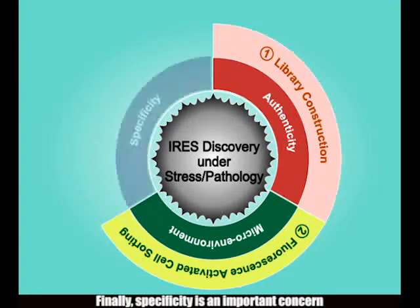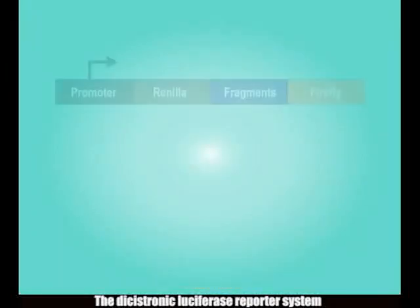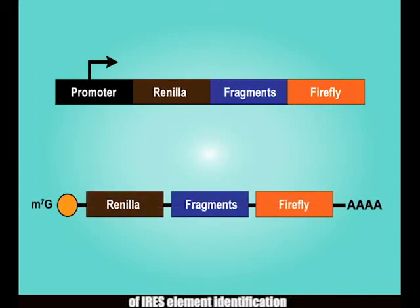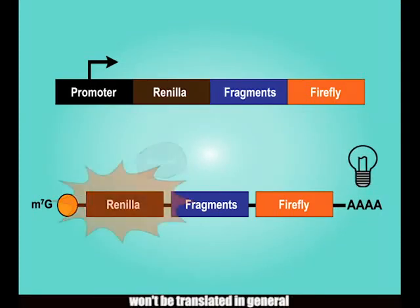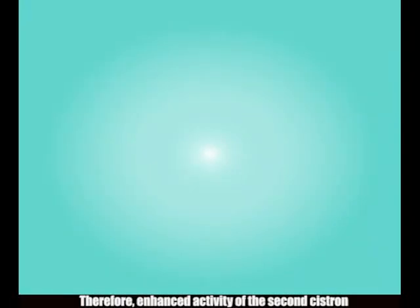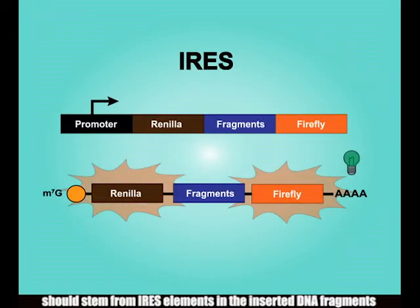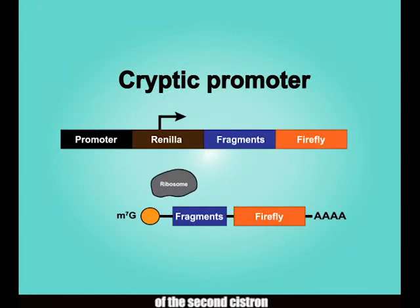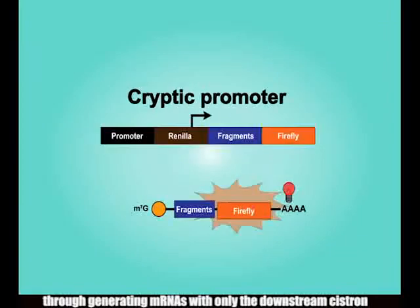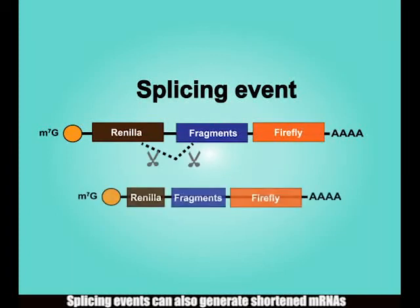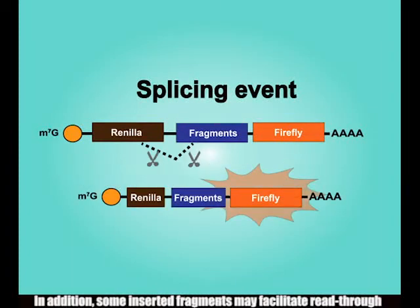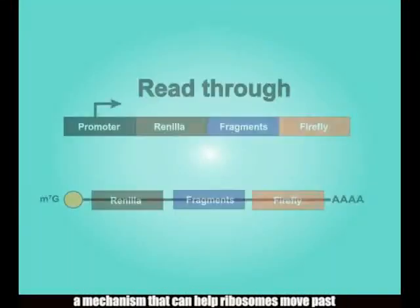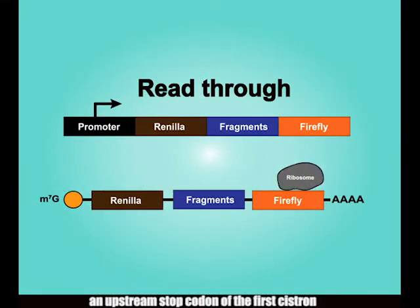Finally, specificity is an important concern because false positive signals could be easily generated in IRES discovery. The disistronic luciferase reporter system has been considered the gold standard of IRES element identification. As this cartoon depicts, the second cistron of the disistronic construct won't be translated in general. Therefore, enhanced activity of the second cistron should stem from IRES elements in the inserted DNA fragments. However, cryptic promoter activity can increase expression of the second cistron through generating mRNAs with only the downstream cistron. Splicing events can also generate shortened mRNAs without an intact upstream cistron. In addition, some inserted fragments may facilitate read-through, a mechanism that can help ribosomes move past an upstream stop codon of the first cistron.